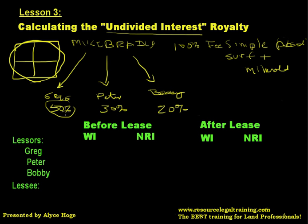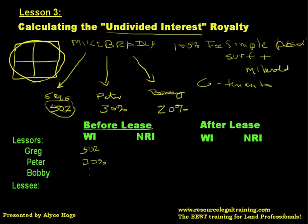In terms of co-tenancy: Greg is a 50% owner, Peter and Bobby own their respective shares, and these people are called co-tenants. Each co-tenant owns a different share. So before there is an oil and gas lease, Greg owns a 50% working interest, Peter owns a 30% working interest, and Bobby owns a 20% working interest. Working interest — these are the people that pay the bills. Some people find it helpful to think of this as a JIB, or joint interest billing. The net revenue interest is the profits — that's what you're going to get.